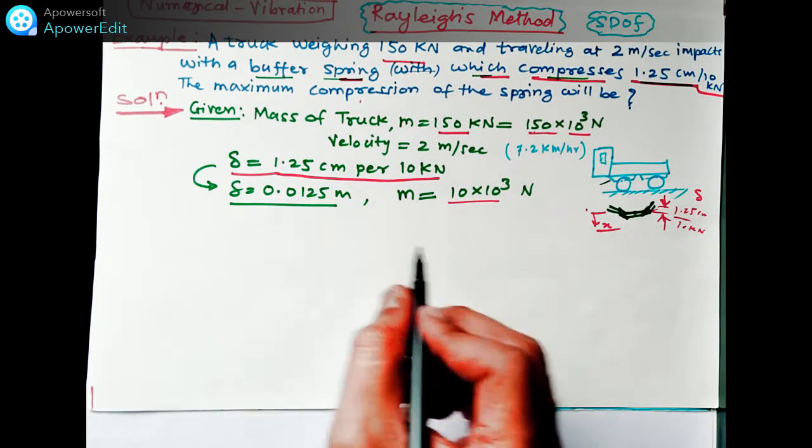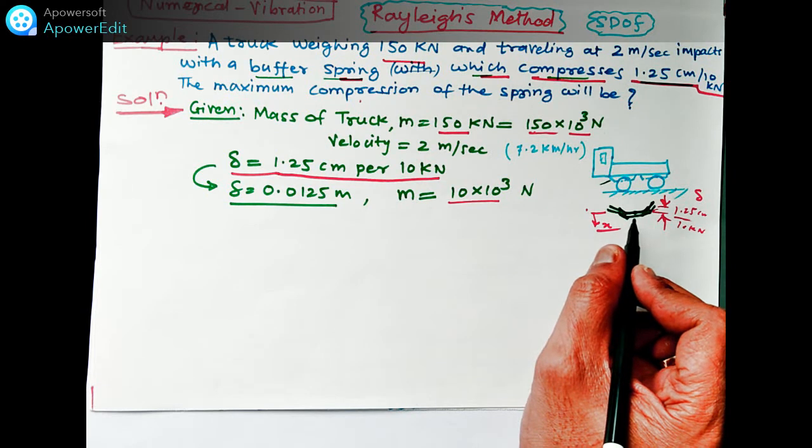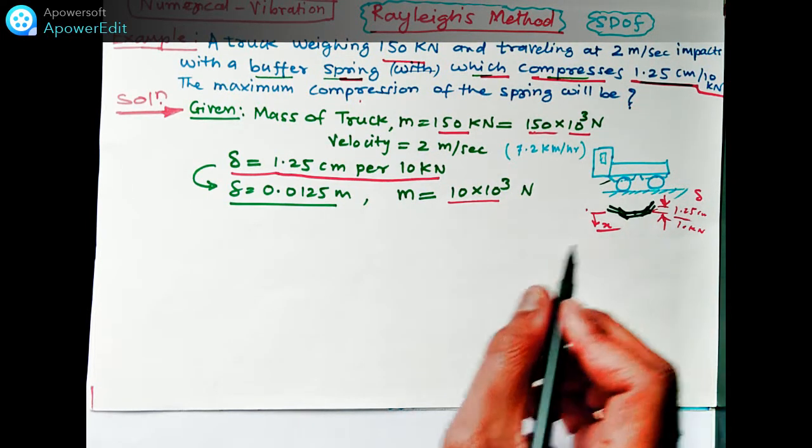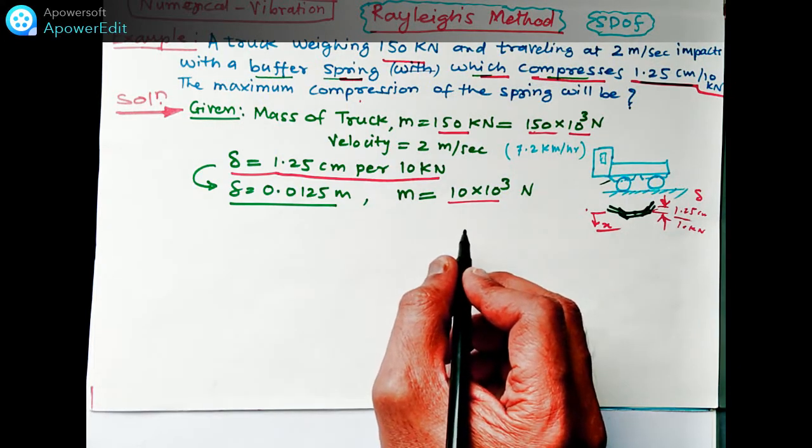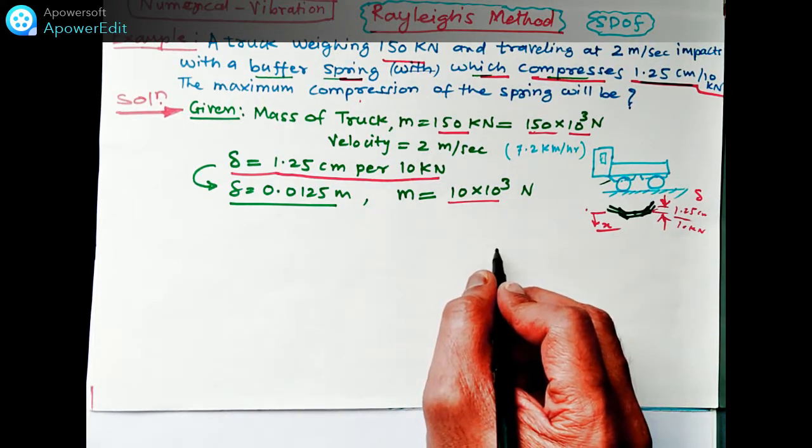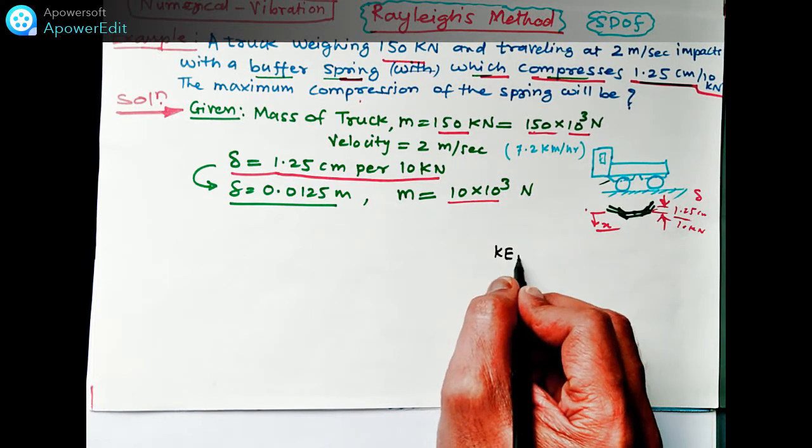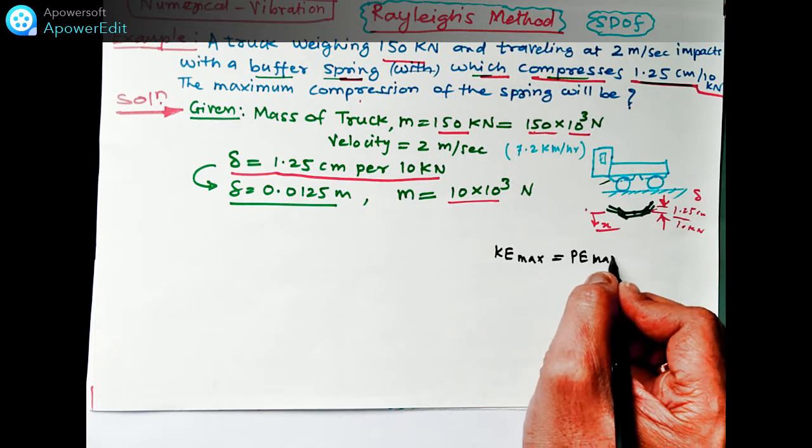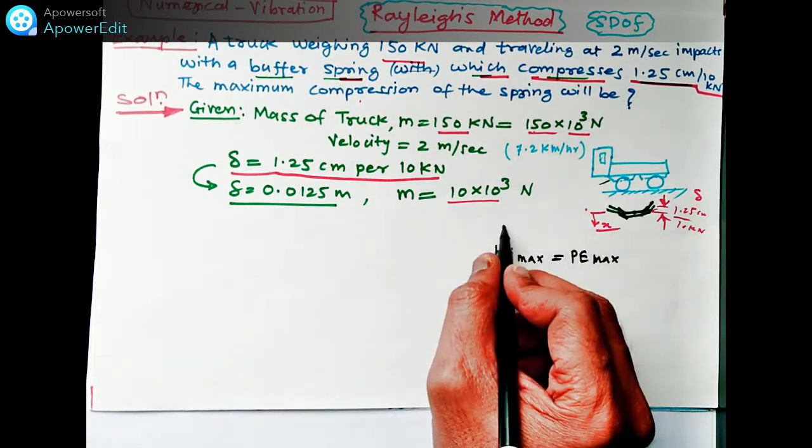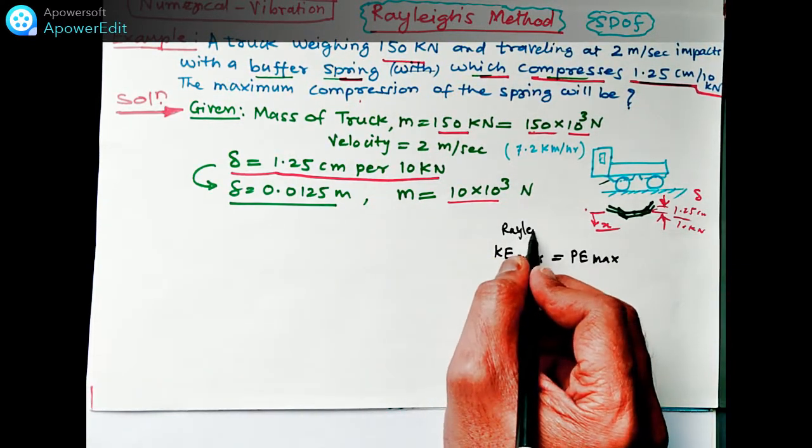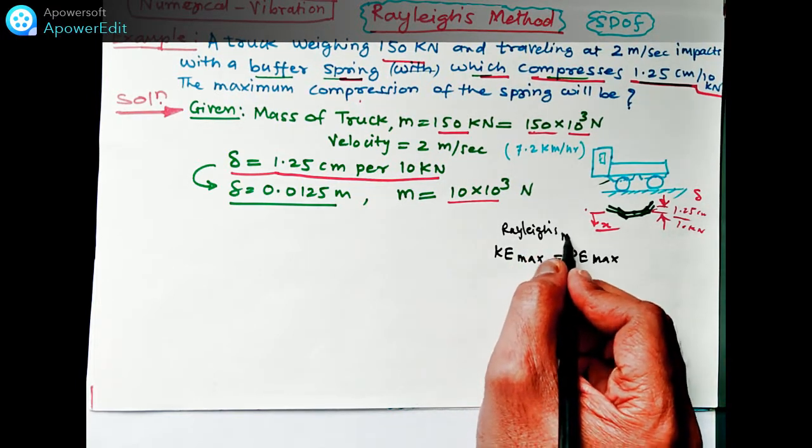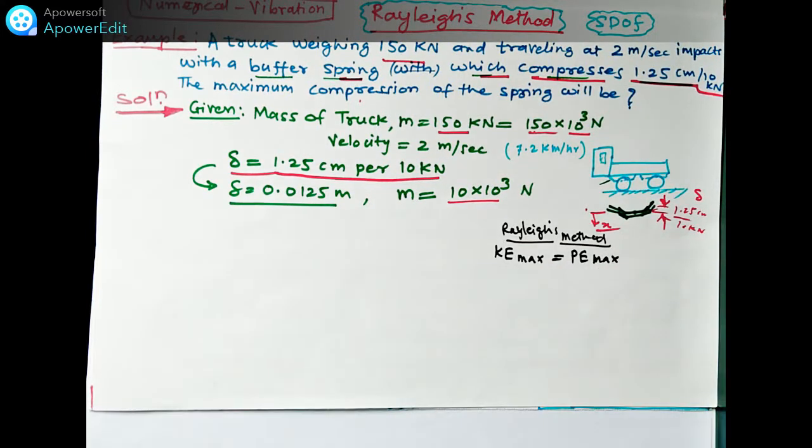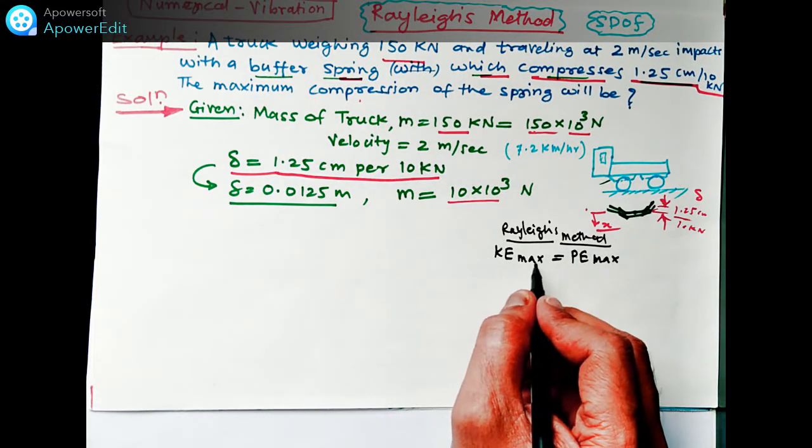So first we have to find out the spring stiffness. Spring stiffness is not given to you. As per the Rayleigh's method, this KE max, as per the Rayleigh's method, the KE max is equal to PE max. As per the Rayleigh's method, this we are going to do.